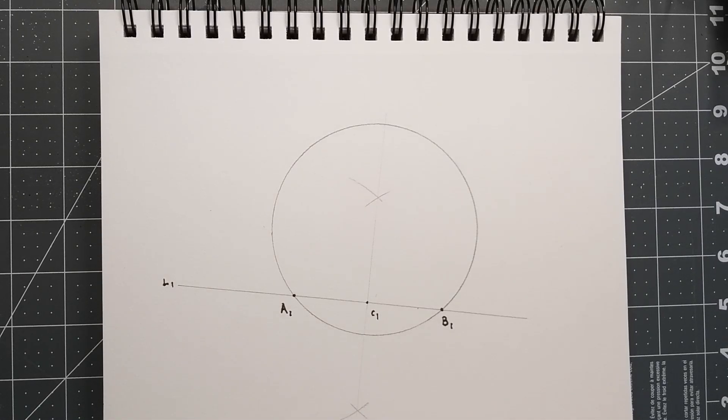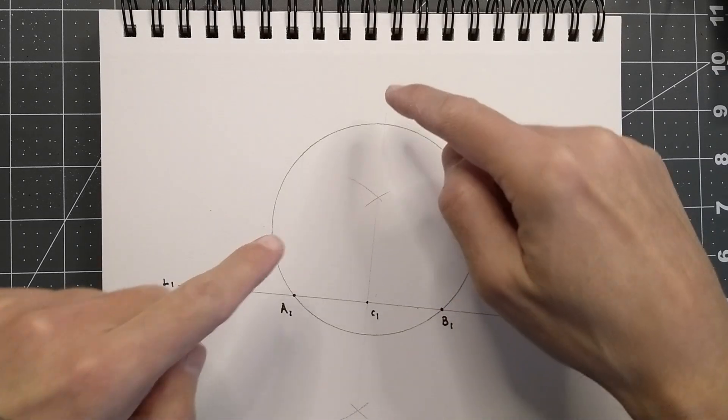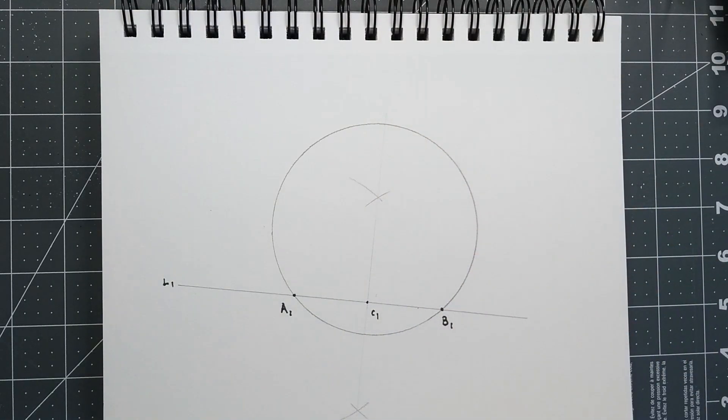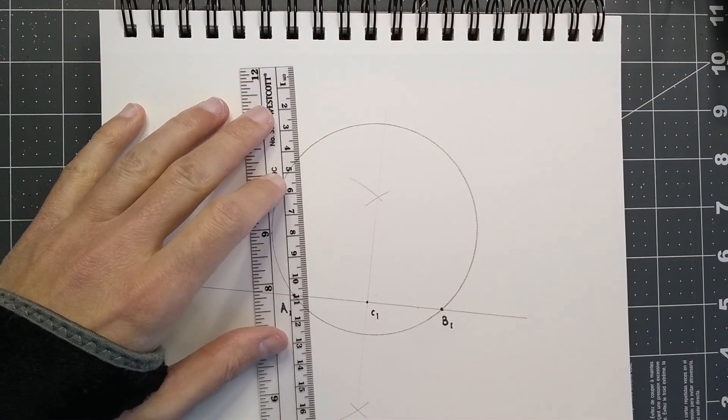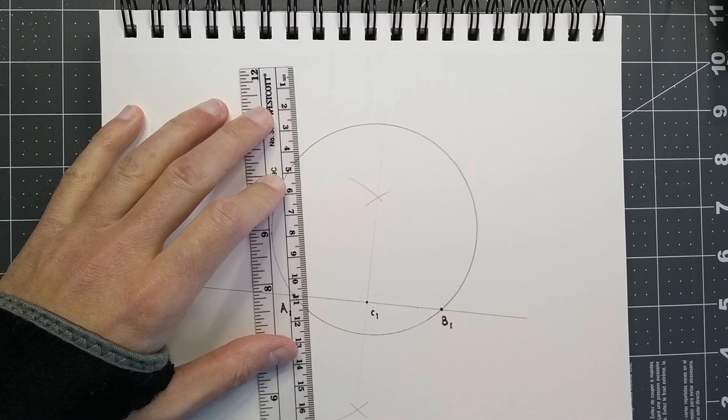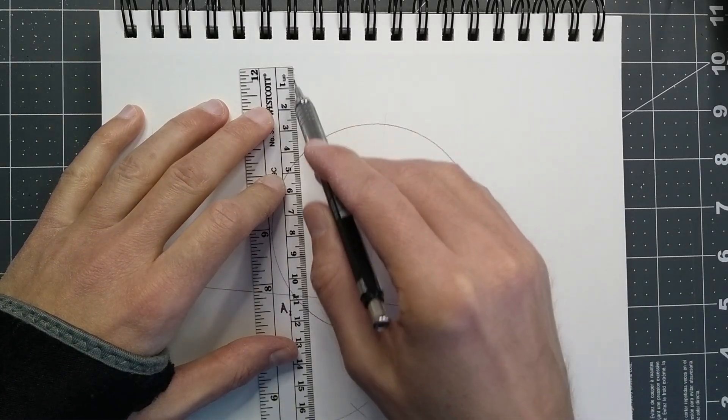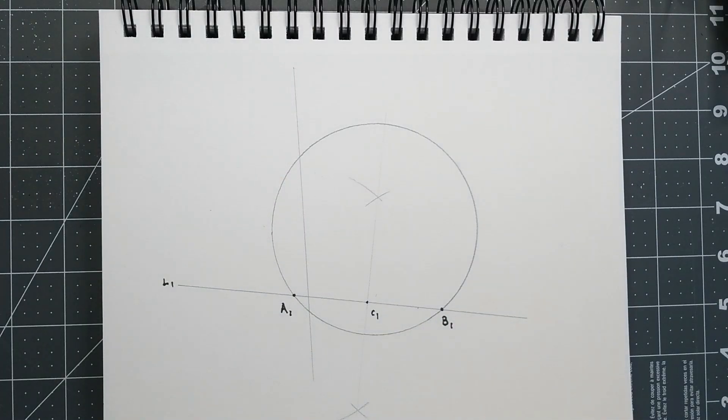We next need a second line that, once again, crosses two points on the circle. So, I'll pick a line right about here. There we go. We'll call this one L2.